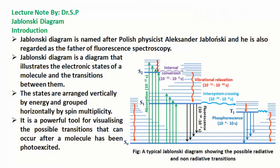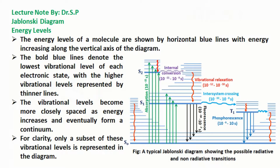The states are arranged vertically by energy and grouped horizontally by spin multiplicity. It is a powerful tool for visualizing the possible transitions that can occur after a molecule has been photo-excited. The energy levels of a molecule are shown by horizontal blue lines, with energy increasing along the vertical axis of the diagram.